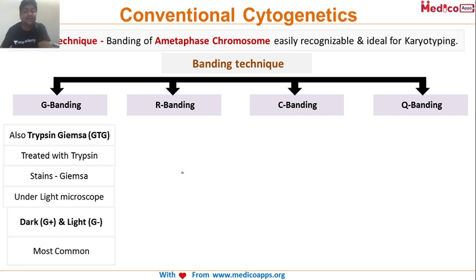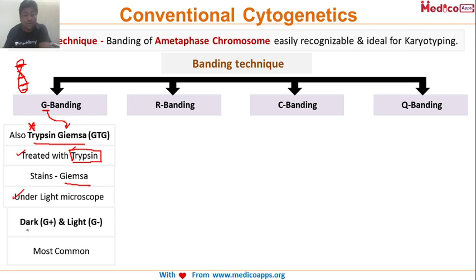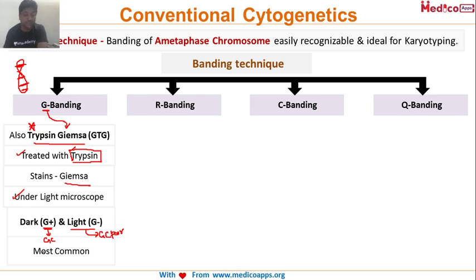Let's look at the first technique: Giemsa banding, or G banding, also called trypsin-Giemsa banding. G stands for Giemsa, which is the dye used. Before applying the dye, the cells are pre-treated with trypsin — that's why it's called trypsin-Giemsa banding. The stain is Giemsa and it is seen under a light microscope. We see alternating dark and light bands on the chromosome.